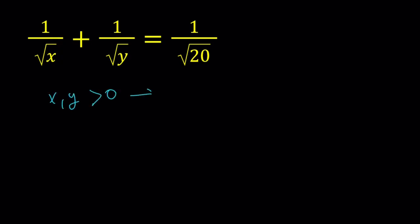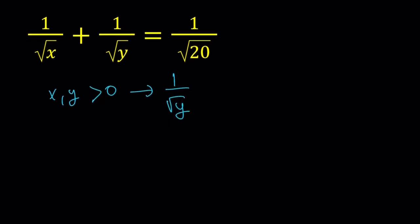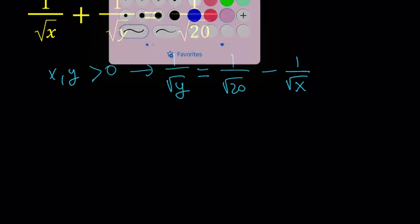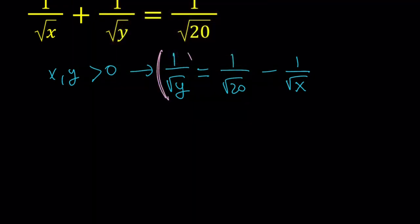Let's isolate 1 over square root of y from here. There's different ways to go about it. I'm going to show you a different approach as well. So 1 over square root of y can be written as 1 over square root of 20 minus 1 over square root of x. Let's square both sides.